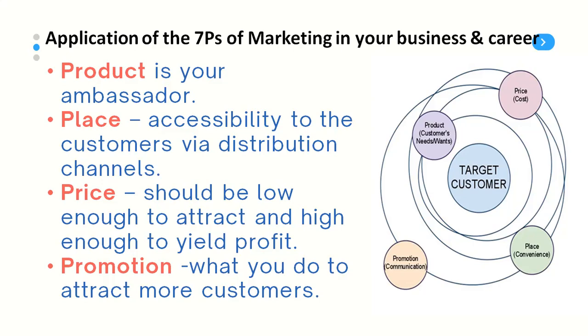You need to understand the seven Ps of marketing. Number one is Product. Your product is your ambassador. Don't produce just because you want to make money — produce because you want a sustainable business that is profitably sustainable and sustainably profitable. Your product is your ambassador. Don't do wishy-washy work — do something strong.